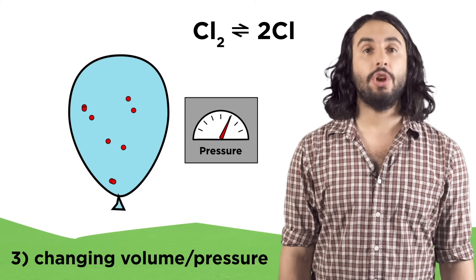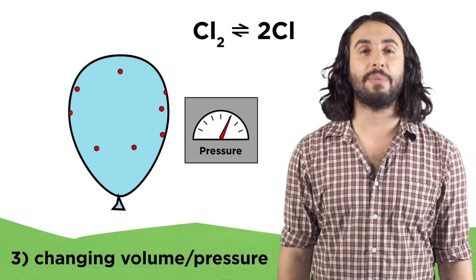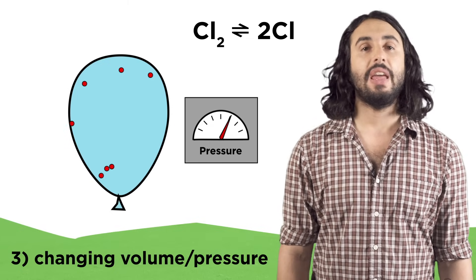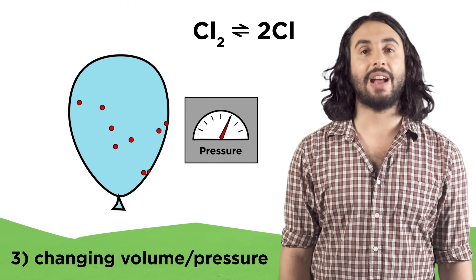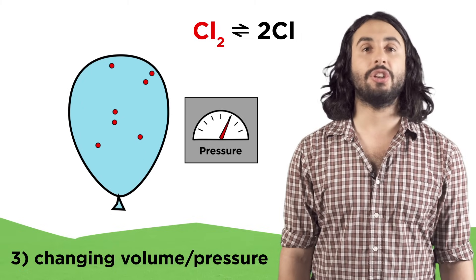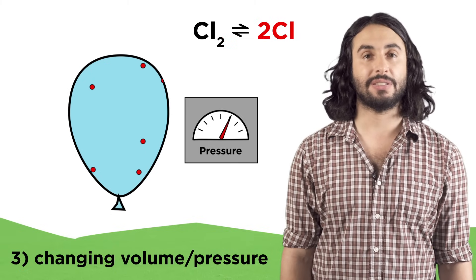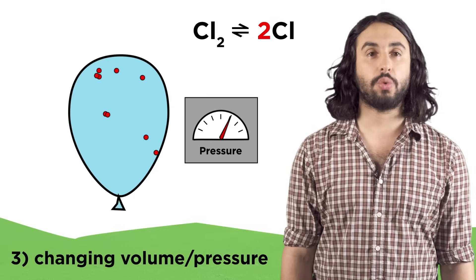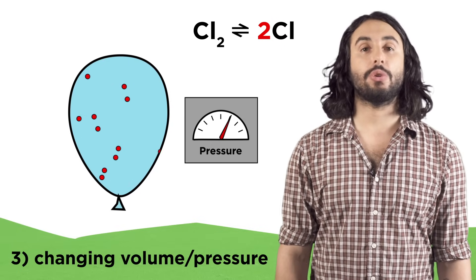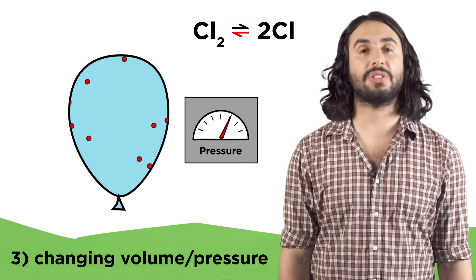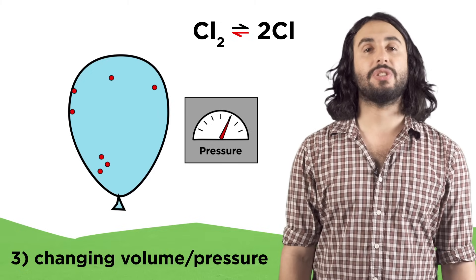If there is a discrepancy in the number of moles of particles on either side of the equilibrium, it will shift towards the side with fewer particles so as to alleviate some of the additional pressure. In this equilibrium between a diatomic molecule and two monoatomic species, the right side has twice as many particles, so shifting left means atoms fusing together, resulting in fewer particles which lowers the pressure on the container.